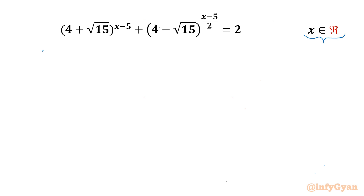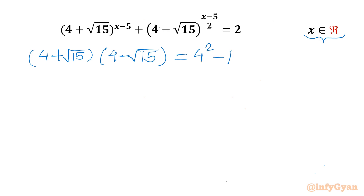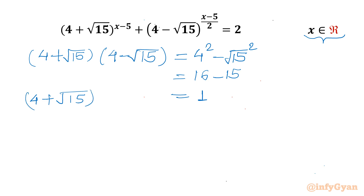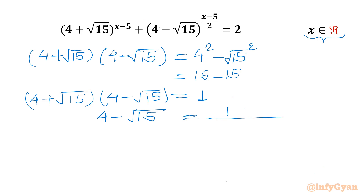Let us get started with the product (4 + √15)(4 − √15). Using the identity (a + b)(a − b) = a² − b², it equals 16 − 15 = 1. So (4 + √15)(4 − √15) = 1, which means (4 − √15) = 1 / (4 + √15).